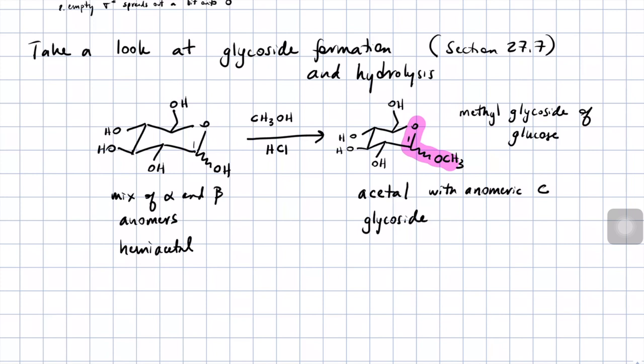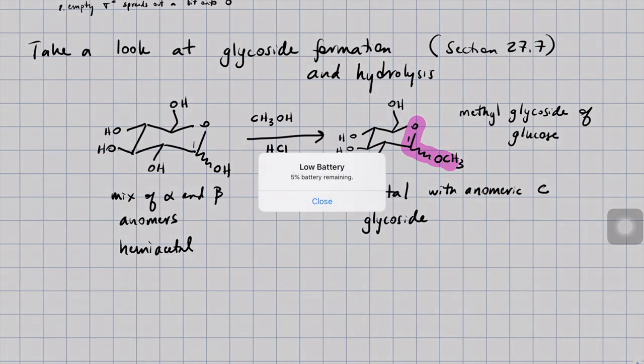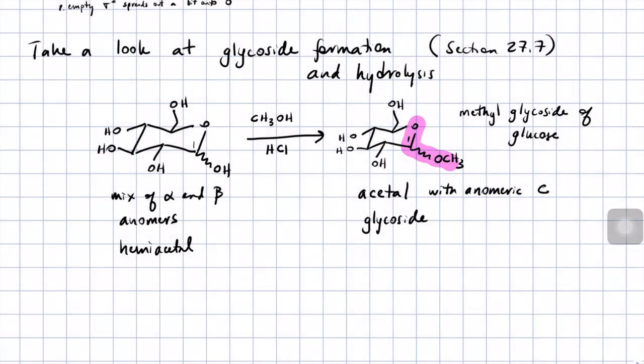It would also be useful to know the mechanism of glycoside hydrolysis — that's just the backwards reaction. The backwards reaction to get from the glycoside back to the hemiacetal would just use hydronium in an excess of water — basically acetal hydrolysis conditions. That mechanism is typical of a lot of mechanisms involving carbohydrate chemistry.